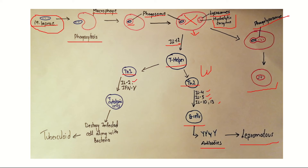If Th1 cells are activated, they produce cytokines such as interleukin-2 and interferon-gamma. These cytokines activate T cytotoxic cells, which kill the infected cell along with the bacteria inside it — preventing the bacteria from spreading and multiplying. Hence the infection is mild, and this form of leprosy is known as the tuberculoid form.